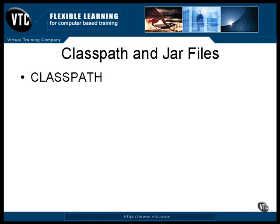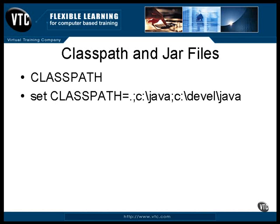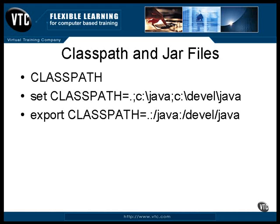On a Windows system, the directory names are separated by semicolons. A typical command to set a Windows class path looks like this. On a Unix or Linux system, the directory names are separated by colons. You can set it this way.